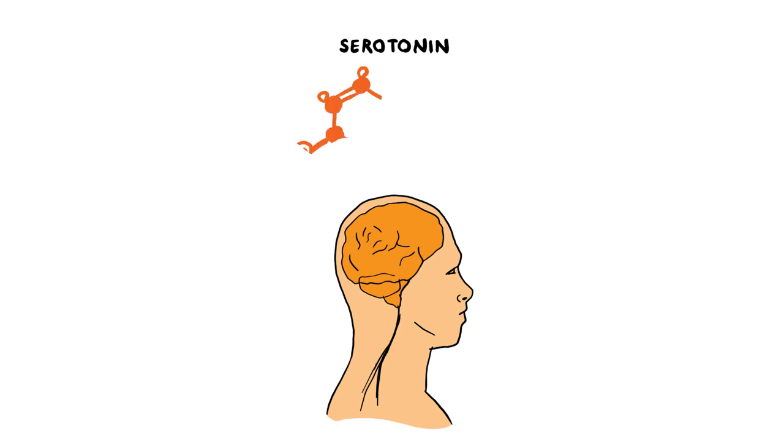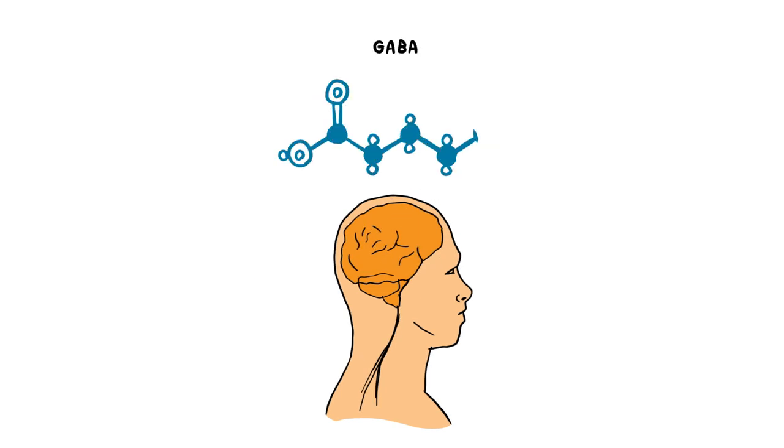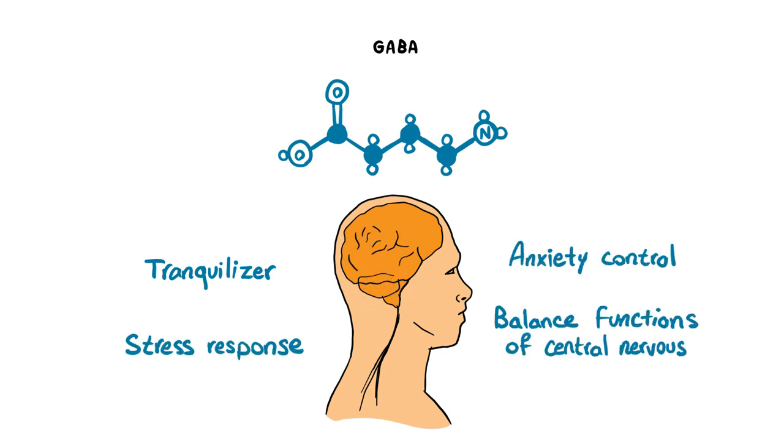Serotonin. This neurotransmitter is responsible for stabilizing moods and regulating emotions. Gamma-aminobutyric acid, or GABA, acts as a natural tranquilizer, mitigating the stress response and lowering anxiety levels, as well as slowing down functions of the central nervous system.